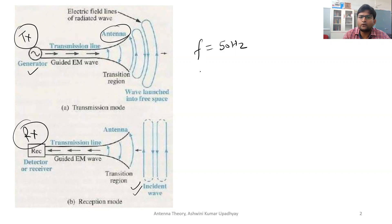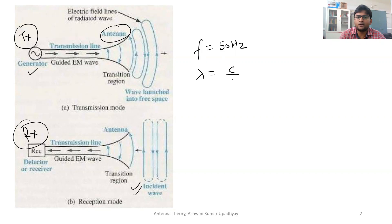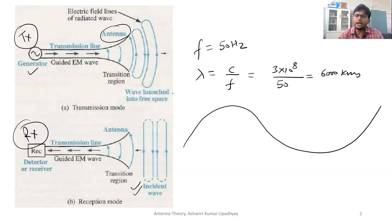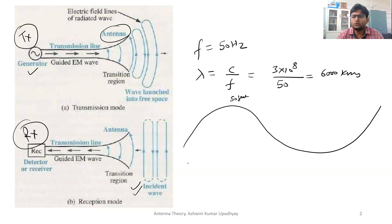What happens is, if you calculate the wavelength of this signal — the electricity signal that comes in your home as alternating voltage or current — it has a wavelength of 6,000 kilometers. So it is so big. Whatever may be the length of wires in your home, at max if you consider a single room, it will be 10 to 20 feet or even 50 feet. And the whole wavelength is 6,000 kilometers.